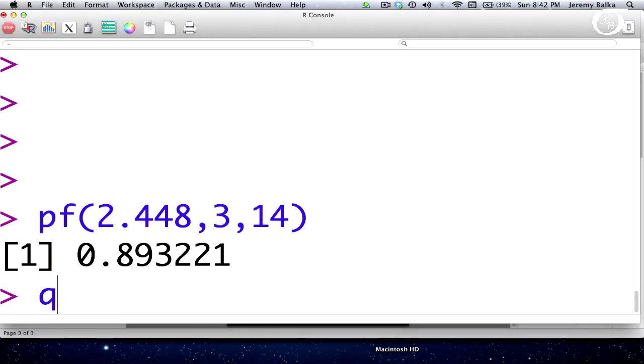And the command to do that is QF. So we're going to tell R, please give us the F value that has an area to the left of 0.975 under an F distribution with 3 and 14 degrees of freedom.